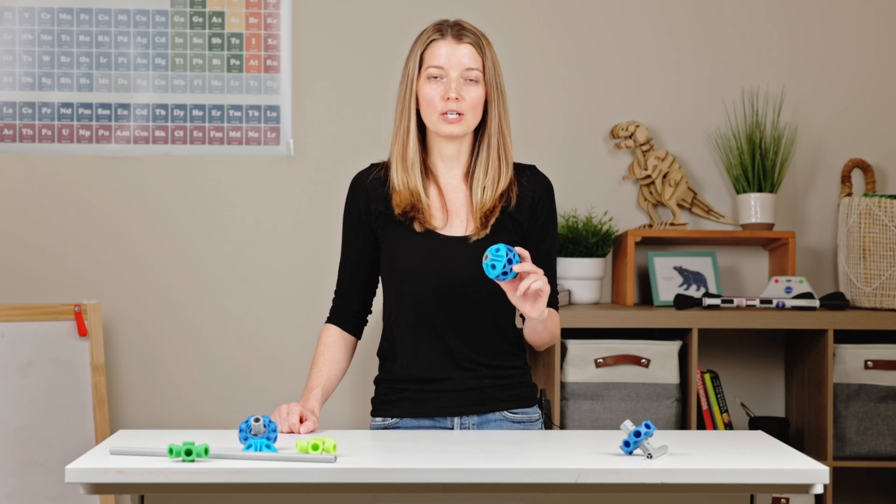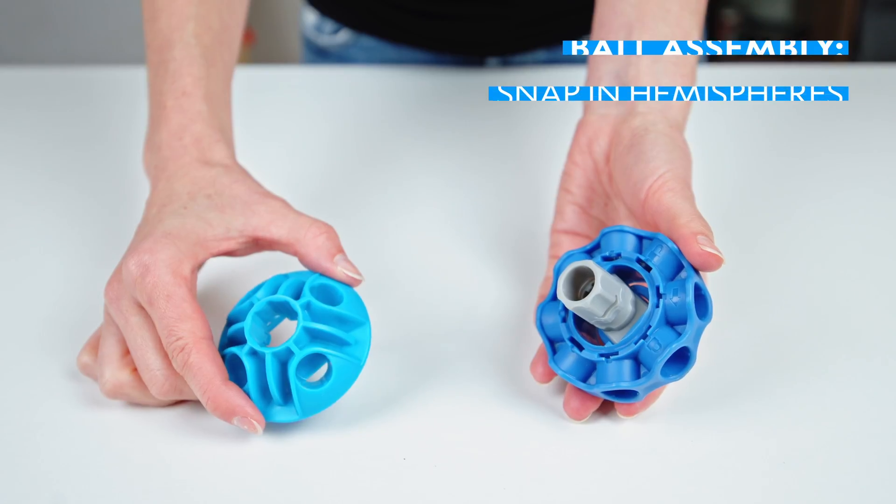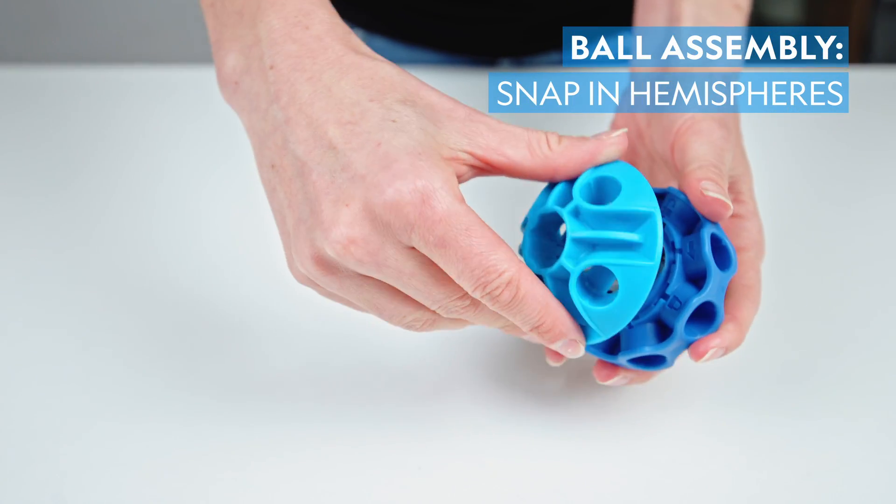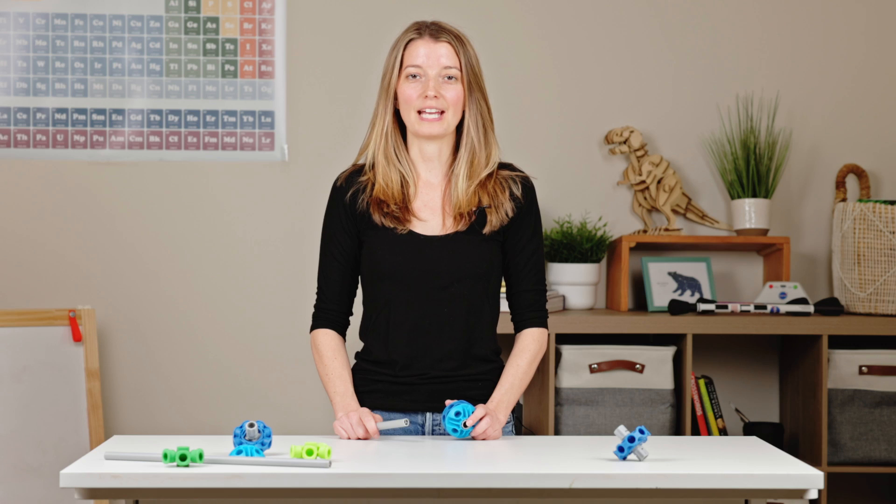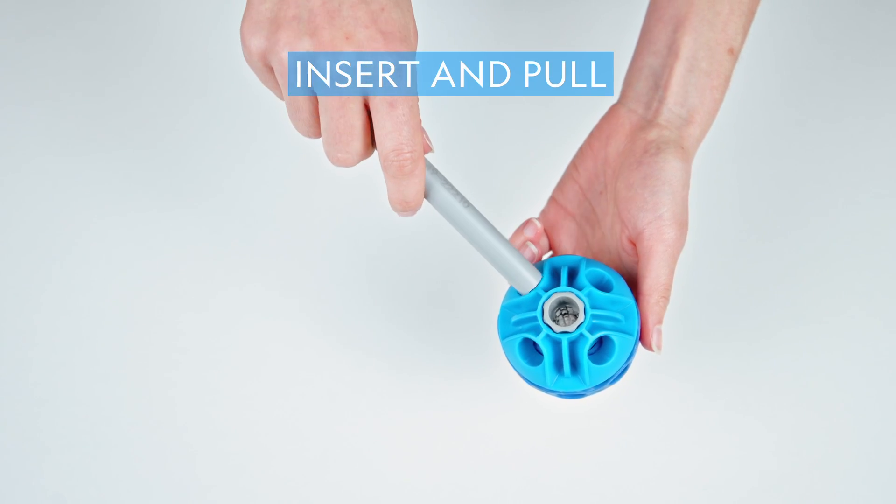It's also the centerpiece for the ball assembly. Just snap the hemispheres on each side. To disconnect a hemisphere, use a pole to break apart.